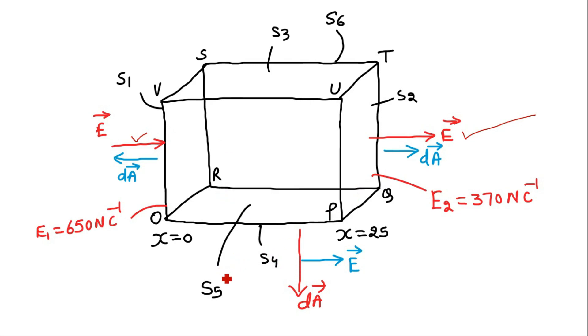It has six faces which are S1, this face is S1, this face is S2, this face is S3, bottom face is S4, and the face toward the front that is OPUV is S5, and face at the back that is QRST is S6.